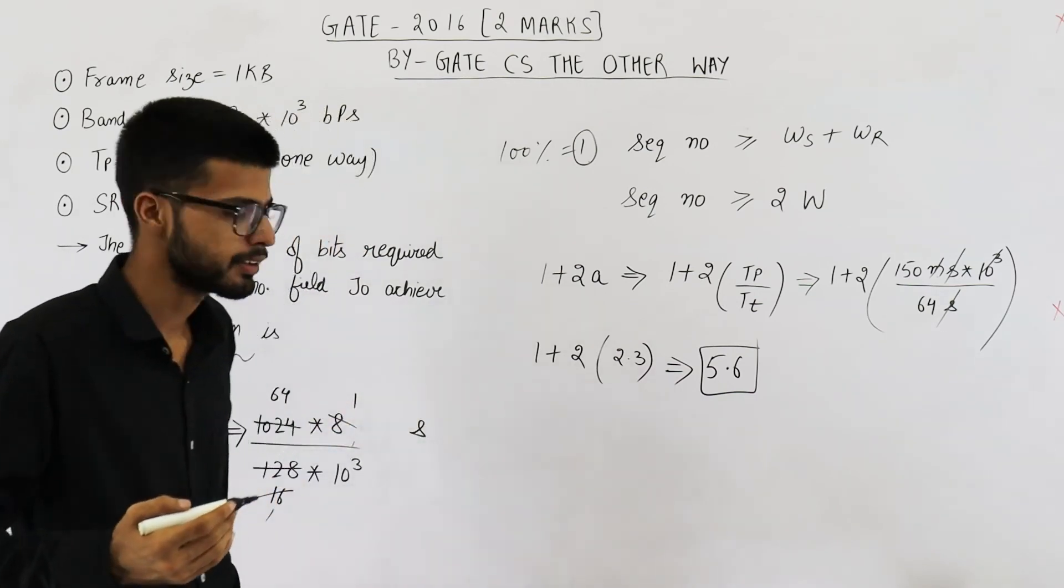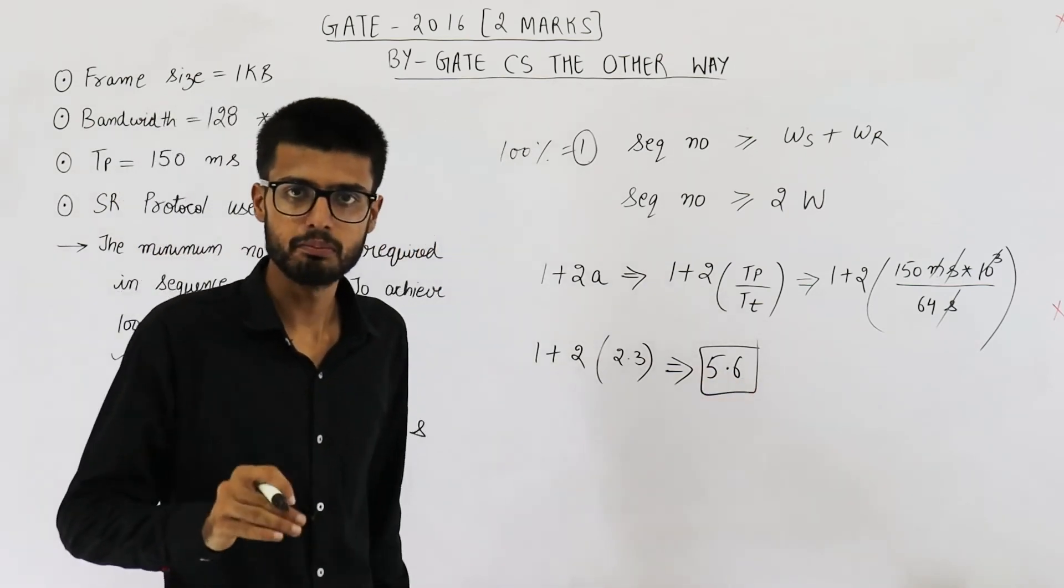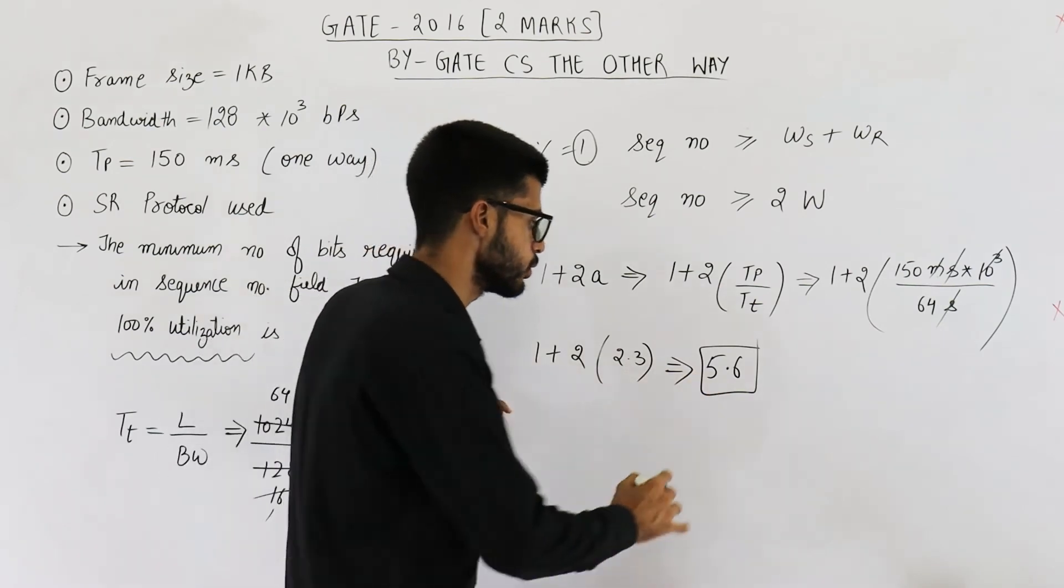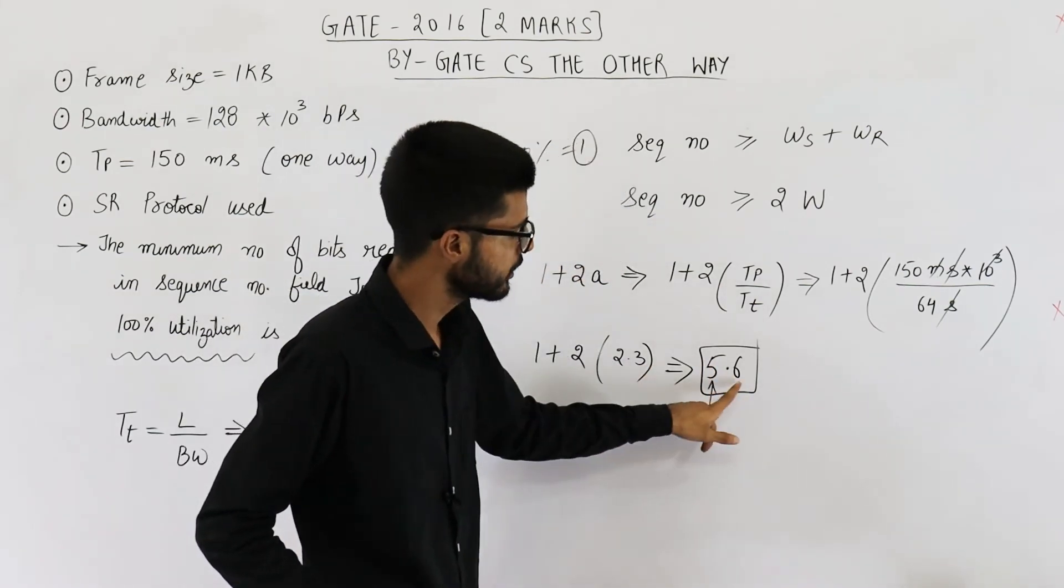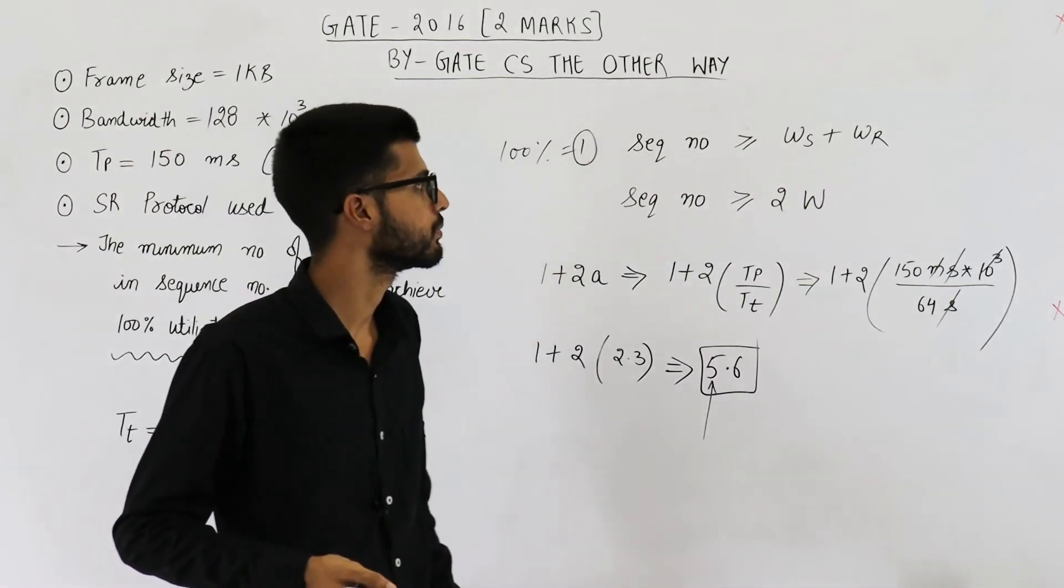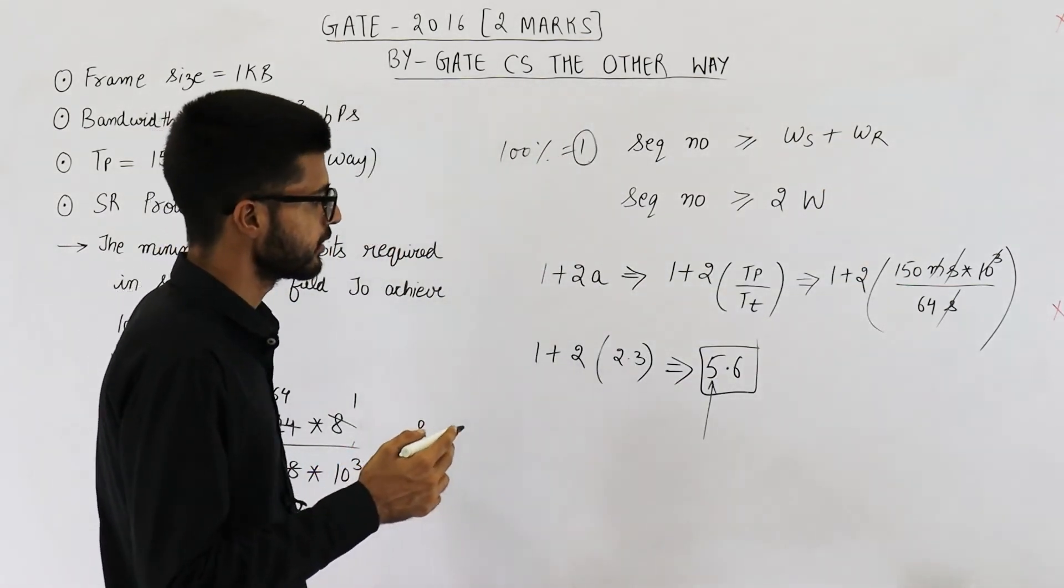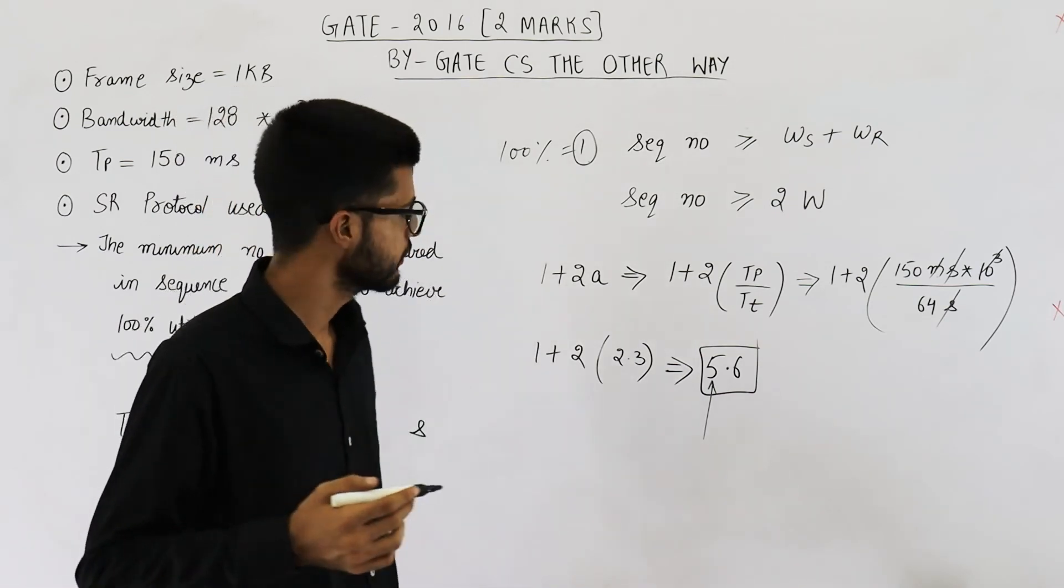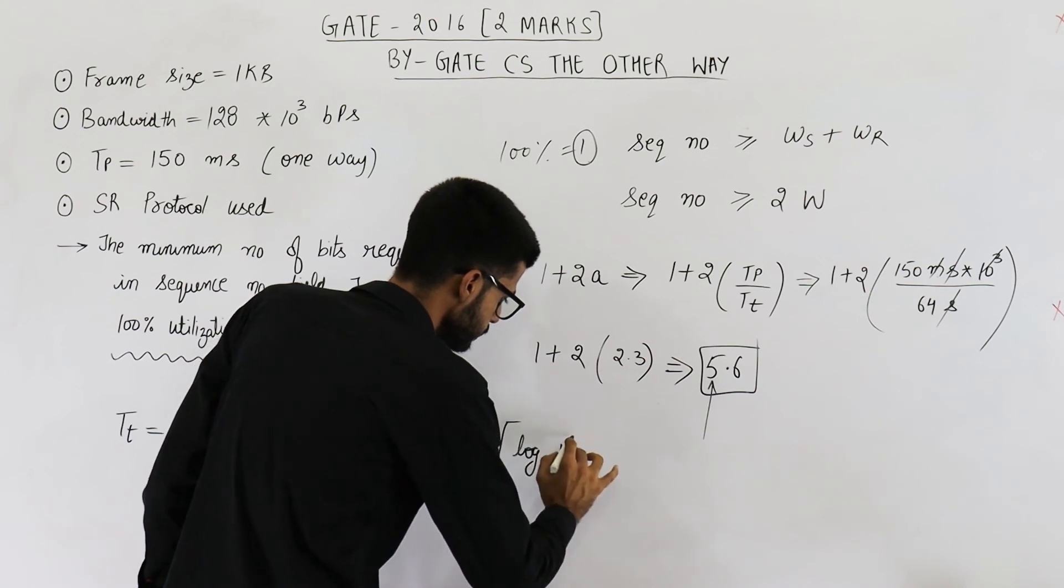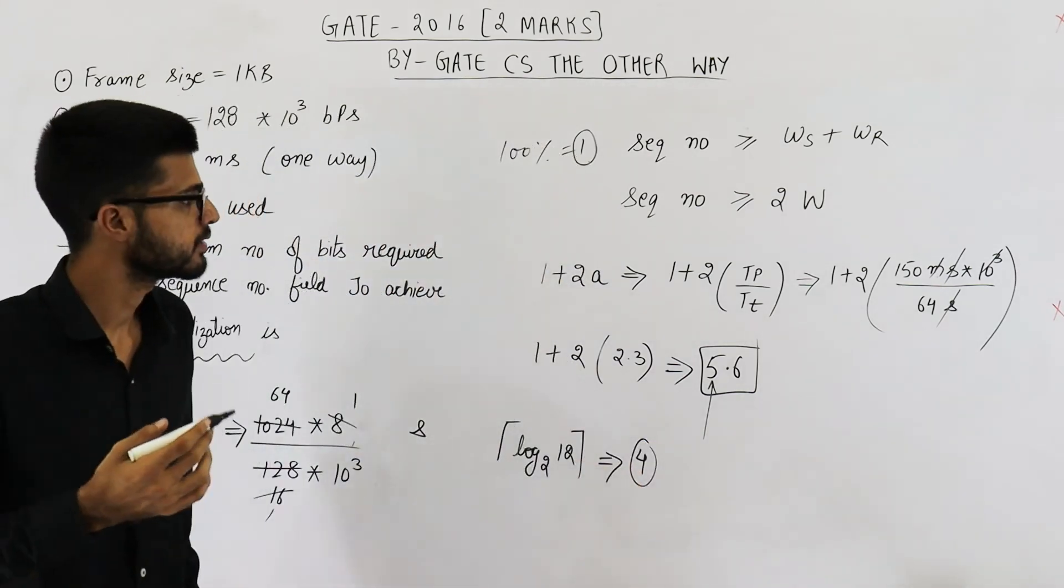See, the sender is sending 5 complete packets and some part of next packet is also sent. That next packet has to be numbered, right? So it will consume next sequence number also. So 5 sequence numbers are consumed for these 5, next one is consumed here. So 6 sequence numbers will be required at the sender side and 6 more sequence numbers will be required for distinction at the receiver side. So this comes out to be 6 plus 6, that is 12 sequence numbers are required and log 12 to the base 2 will be 4. So this is 4. That means you require 4 bits in that sequence number field.